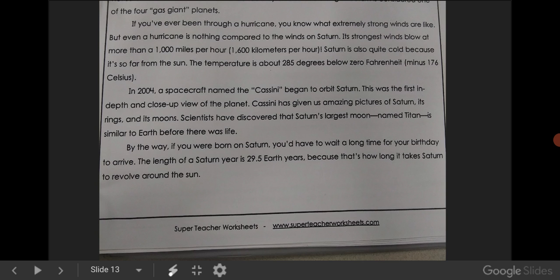By the way, if you were born on Saturn, you'd have to wait a long time for your birthday to arrive. The length of a Saturn year is 29.5 Earth years, because that's how long it takes Saturn to revolve around the Sun.